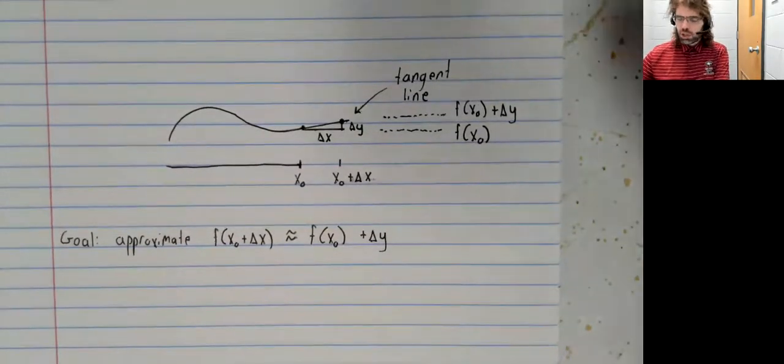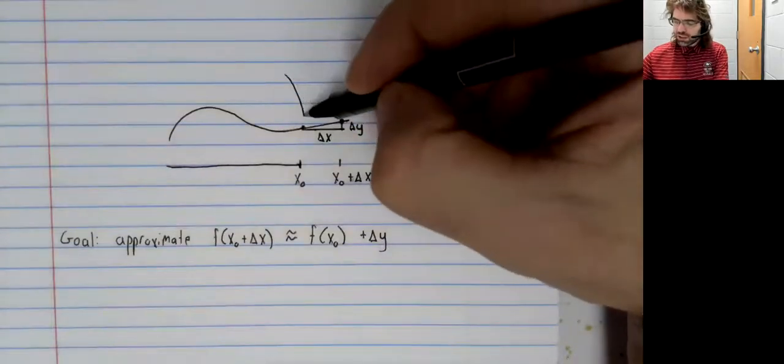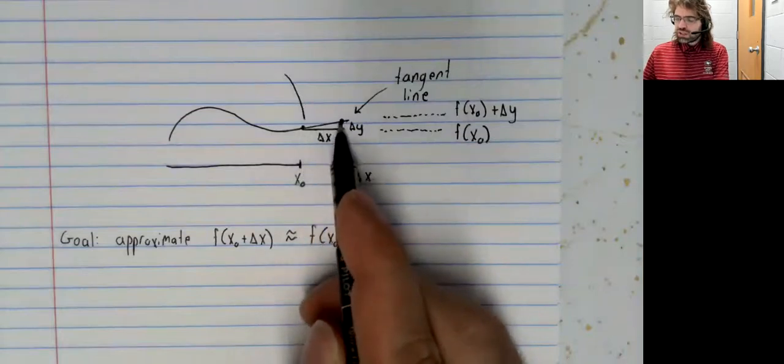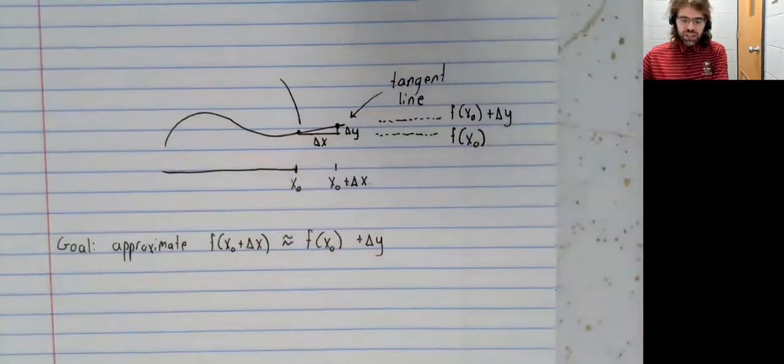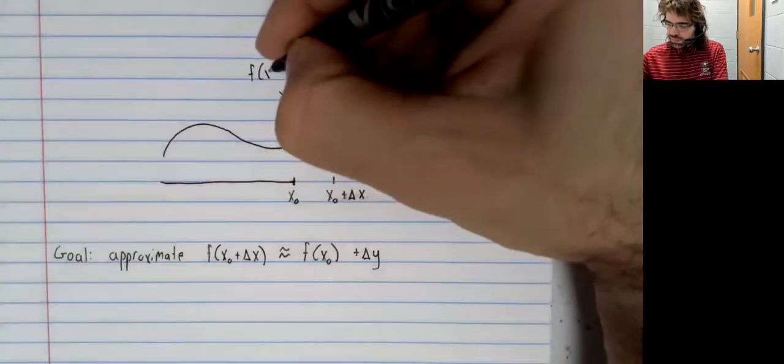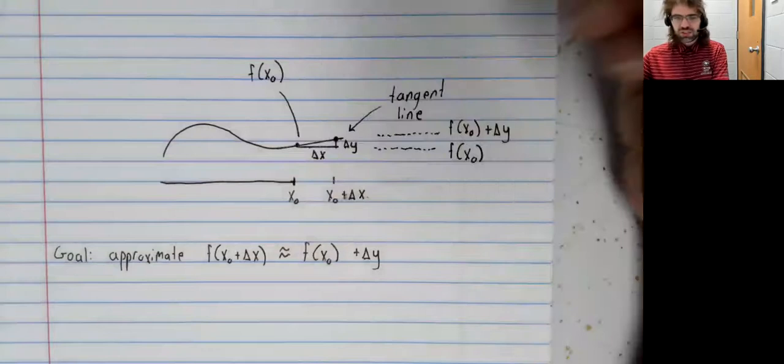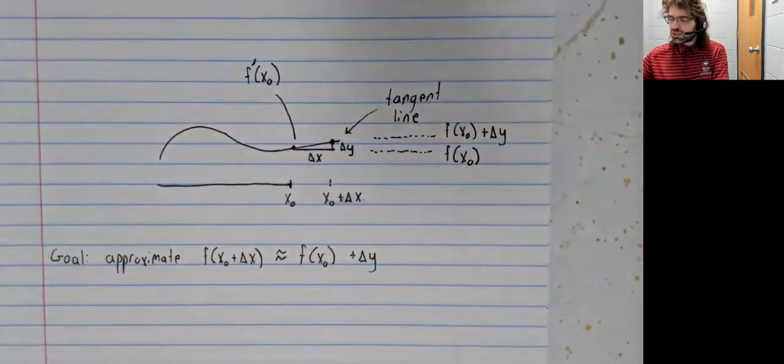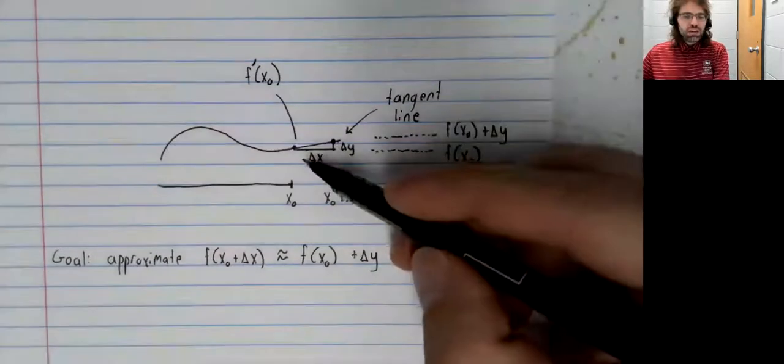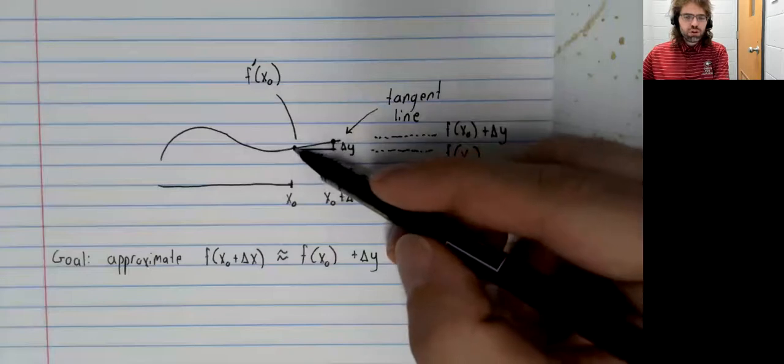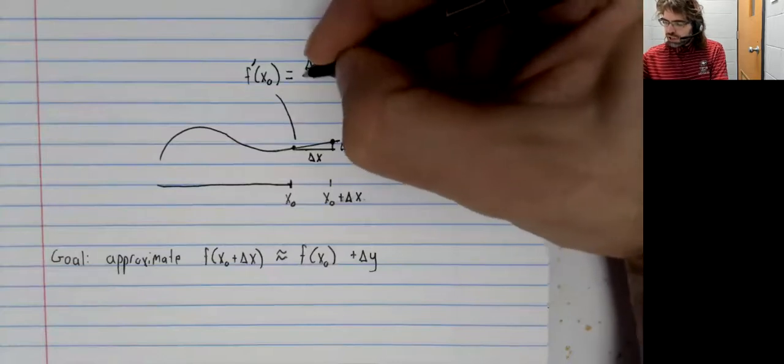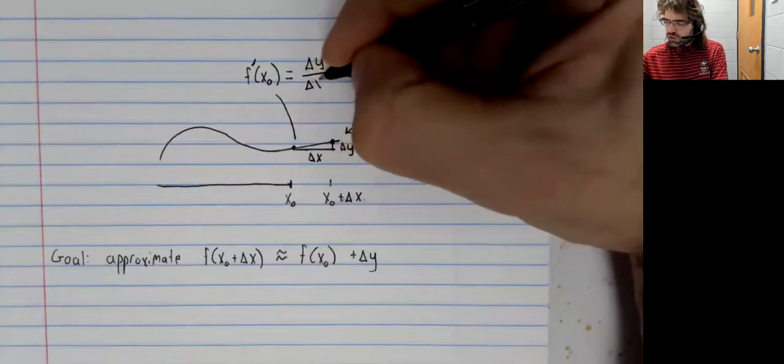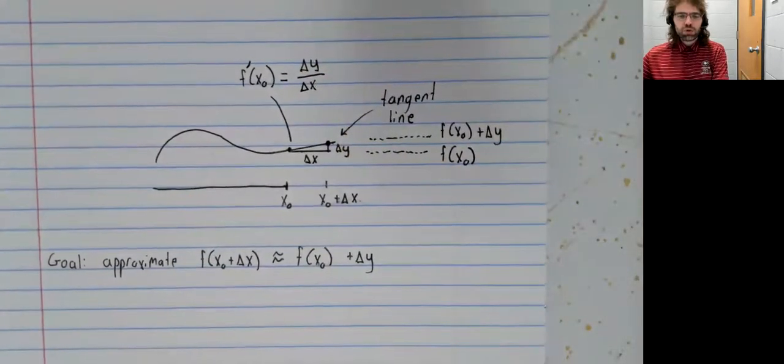However, now I'm going to play with this a little. The slope of this tangent line, by definition, is the derivative. The tangent line is the line that has the derivative as its slope. But the slope of a line is also the rise over the run. So the derivative equals the rise over the run, delta y over delta x.